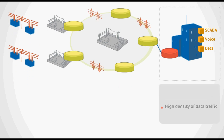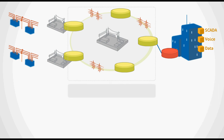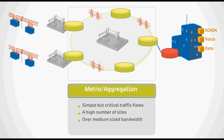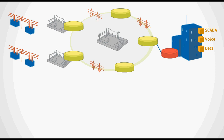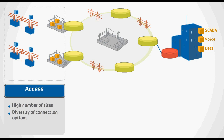The dispatching center has a high density of data traffic and a limited number of sites — similar to a core network. Along the transmission lines, you have relatively simple traffic flows to a high number of sites over medium-sized bandwidth, typical for a metro or aggregation network. The network in the distribution grid might have a high number of sites with a diversity of connection options and requirements — it's like an access network.